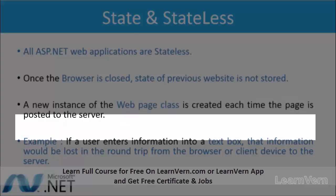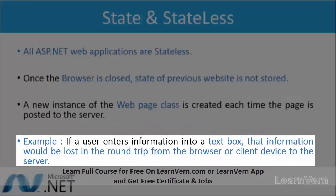For example, a user enters information in a text box. When you request a page to be posted on the server, or if you click a control button, the entire web page — including the text box with the information you have added — is posted to the server side, and then it comes back to the client side. This is the round trip: browser to server, server to browser. In this round trip, the text box data is erased and is not maintained by ASP.NET.